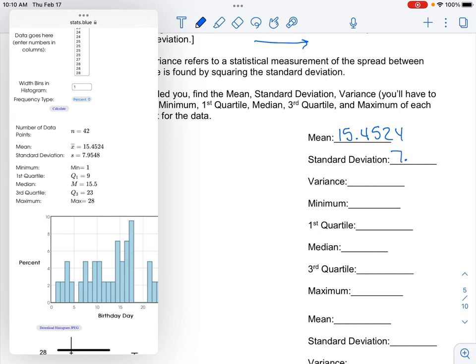So my mean is 15.4524. Our minimum is 1. Our first quartile is 9. Median is 15.5. Third quartile is 23. And maximum is 28.